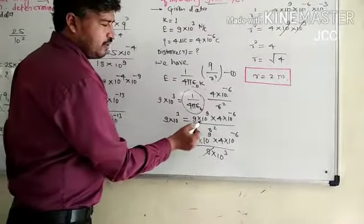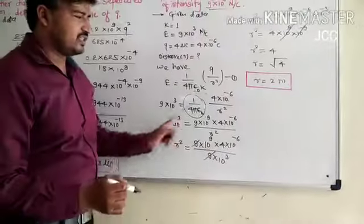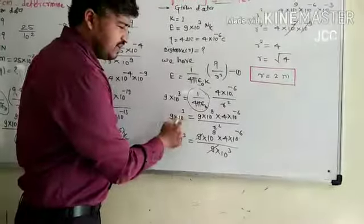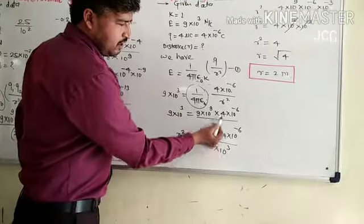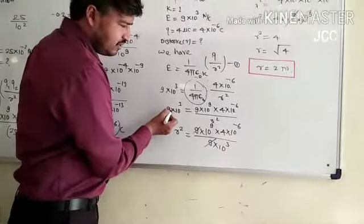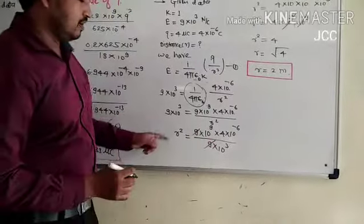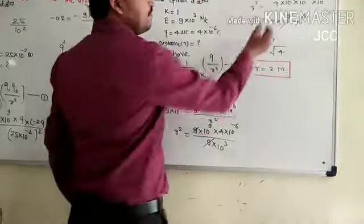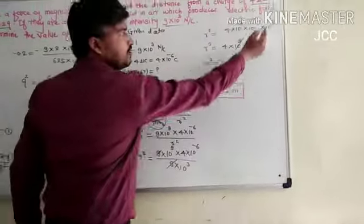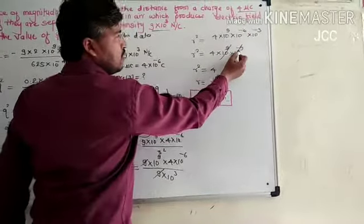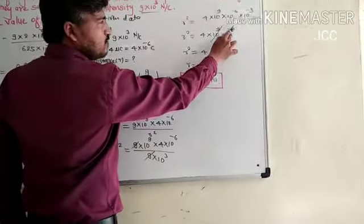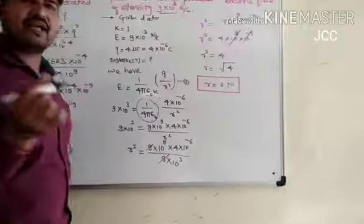Then 9 into 10 raise to 9. R square equal to, multiplication division, 9 into 10 raise to 9, 4 into 10 raise to minus 6, divided by 9 into 10 raise to 3. Minus 9 plus powers get cancelled.